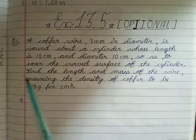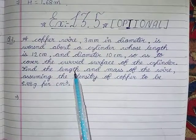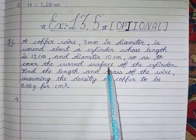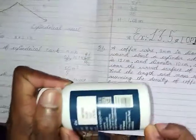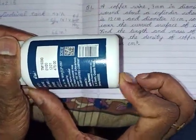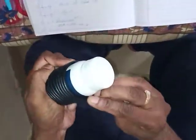First, we have to concentrate on how to find the length of the wire. For that, we have to do some demonstration, then you will understand. Suppose you take this cylinder — suppose this cylinder is 12 cm. I have taken one wire and I am winding it around like this. You have to wind it around the solid cylinder like this.